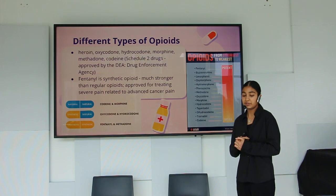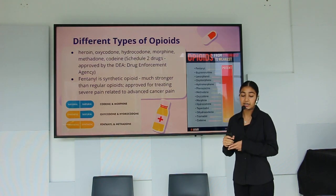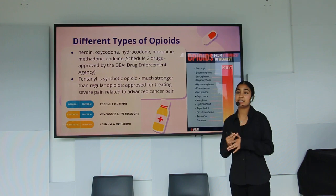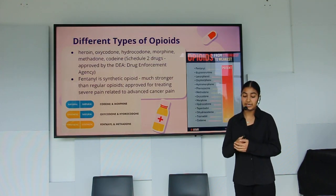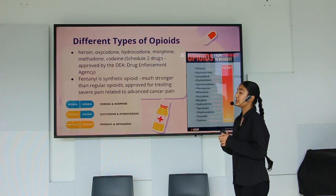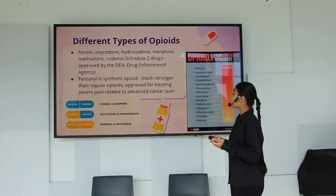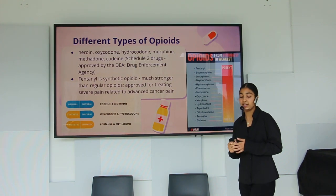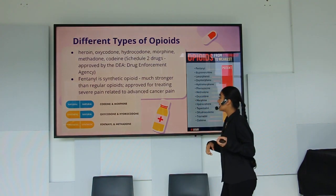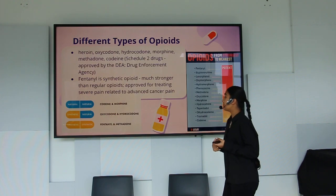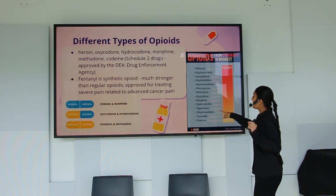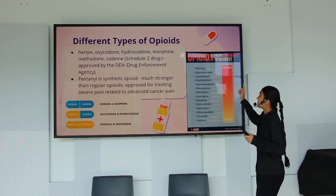The main opioids I'll focus on are heroin, oxycodone, hydrocodone, morphine, methadone, and codeine — all Schedule 2 drugs approved by the DEA (Drug Enforcement Agency). Fentanyl is a synthetic opioid that's much stronger and is approved for treating severe cancer-related pain. As shown in the chart, codeine and morphine are natural opioids, oxycodone and hydrocodone are semi-synthetic, and fentanyl and methadone are fully synthetic — making them more potent. Codeine is the weakest and fentanyl the most potent.